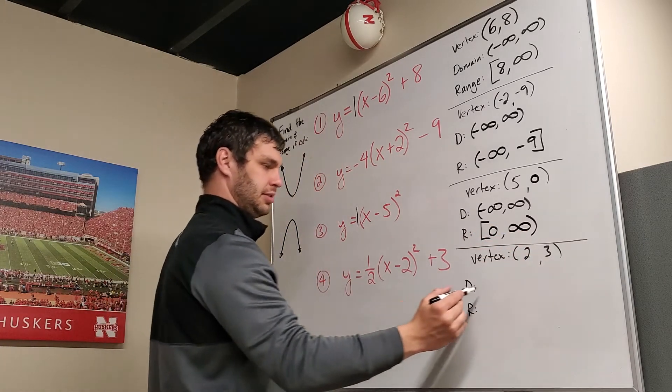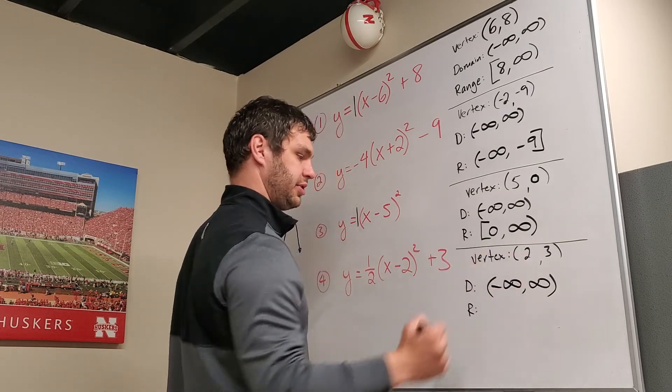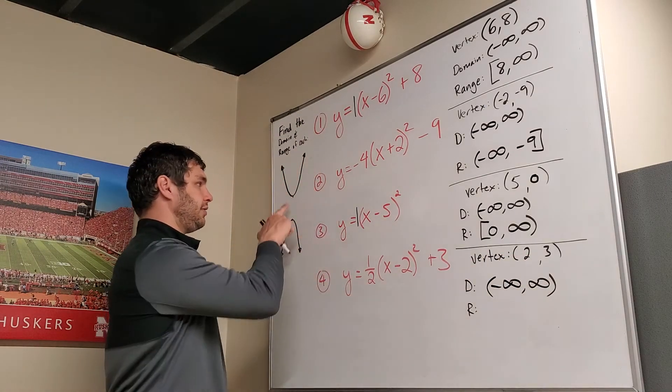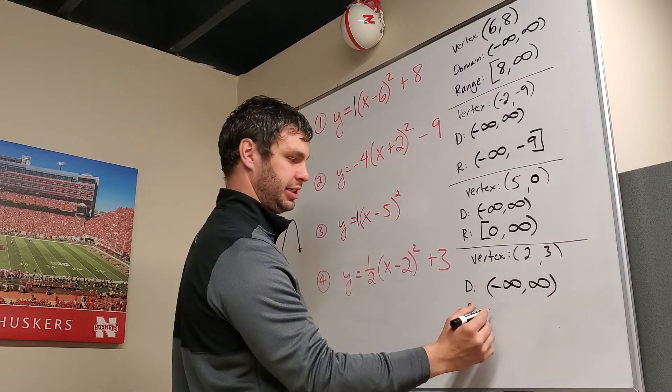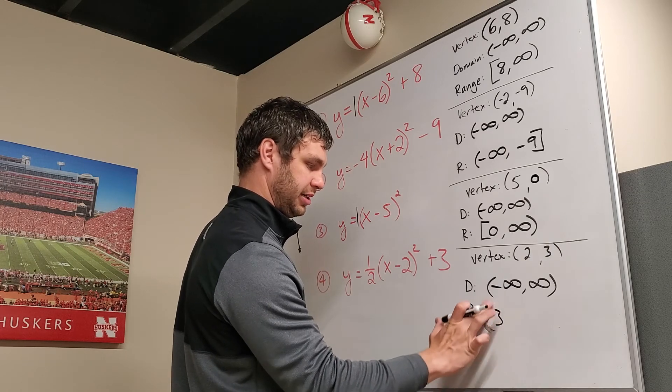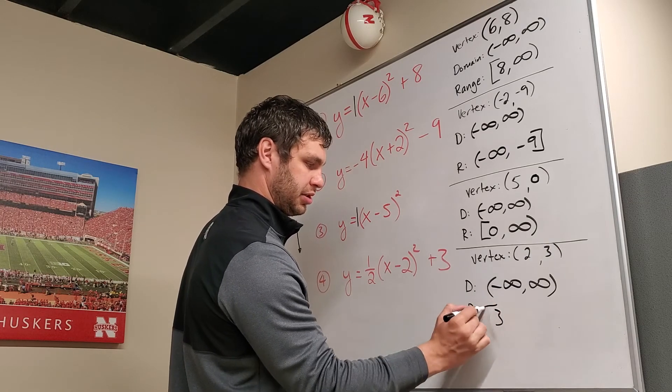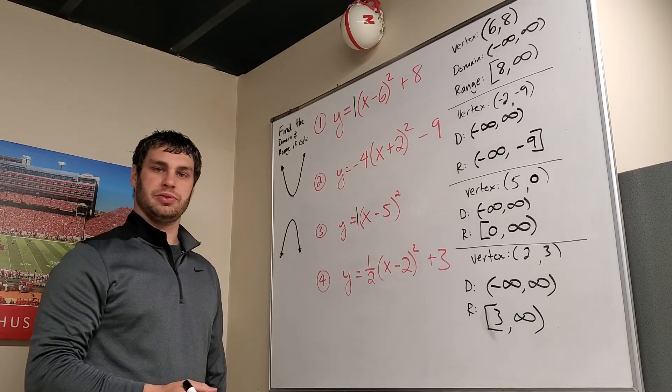Last one, domain is negative infinity to infinity, has a vertex of (2, 3). This one's also positive, it's going to open up. So that means the smallest y value is 3. The largest y value would be infinity. Put a bracket on that one, and there you have the domain and range of all of those.